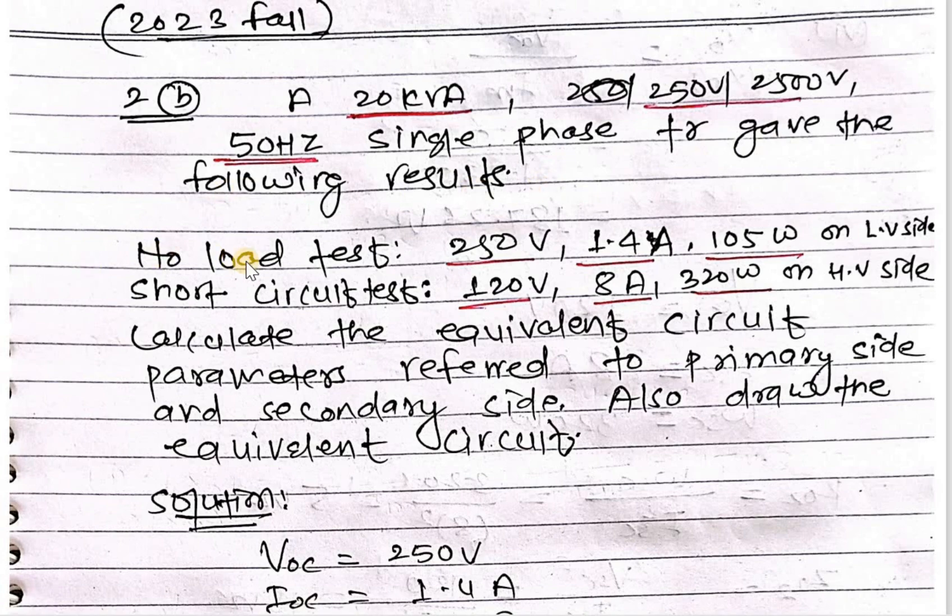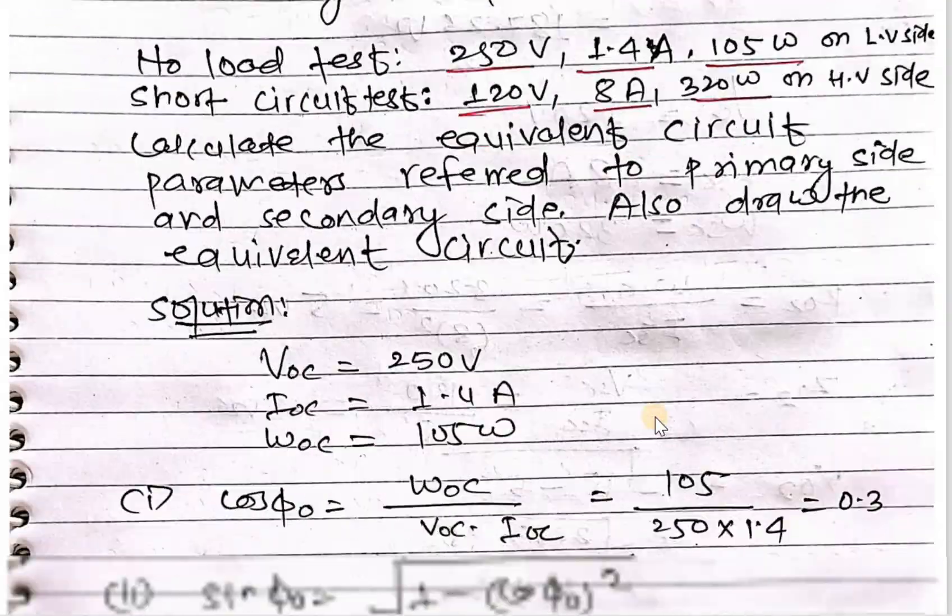No load test: 250 volt, 1.4 ampere, 105 watt on low voltage side. Short circuit test: 120 volt, 8 ampere, 320 watt on high voltage side. Calculate the equivalent circuit parameter referred to primary side and secondary side. Also draw the equivalent circuit diagram.